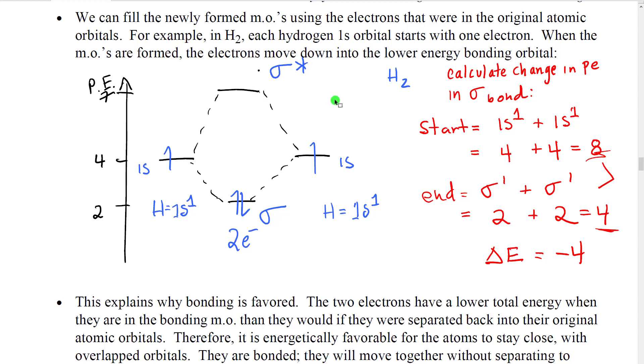Okay. So now, let's say that we were actually making a hydrogen atom. Well, to make a hydrogen atom, we would take a hydrogen molecule. To make a hydrogen molecule, we would take a hydrogen atom with one electron. We would take a second hydrogen atom with one electron. Those one electrons would be in the 1s orbitals, and they would have this potential energy at the start, right? This electron would have a potential energy of four. This electron would have a potential energy of four. So our starting potential energy would be four plus four. It would be eight.